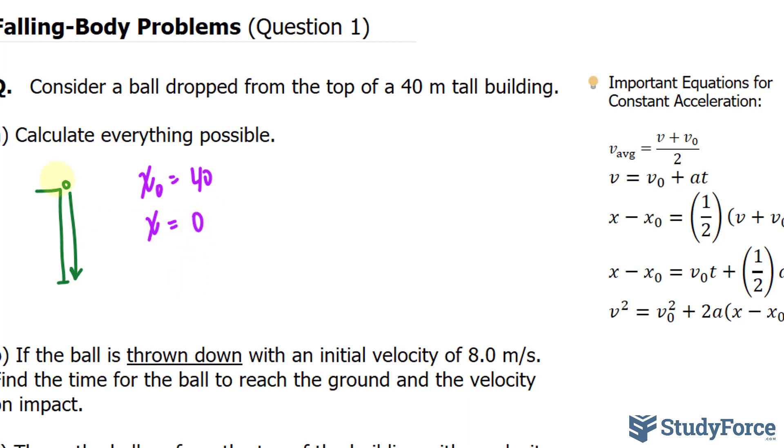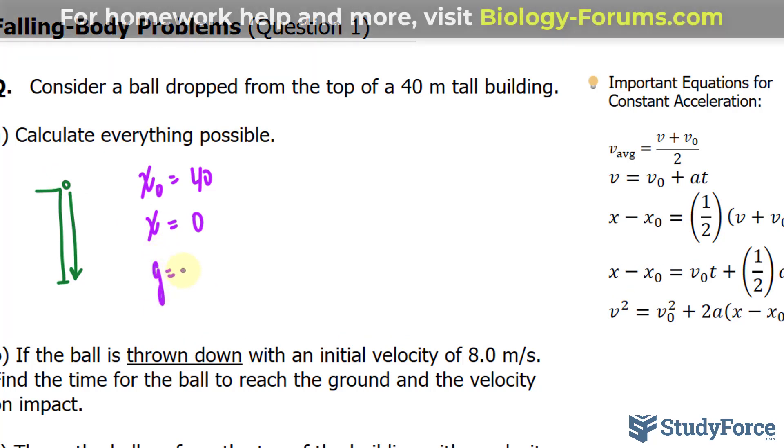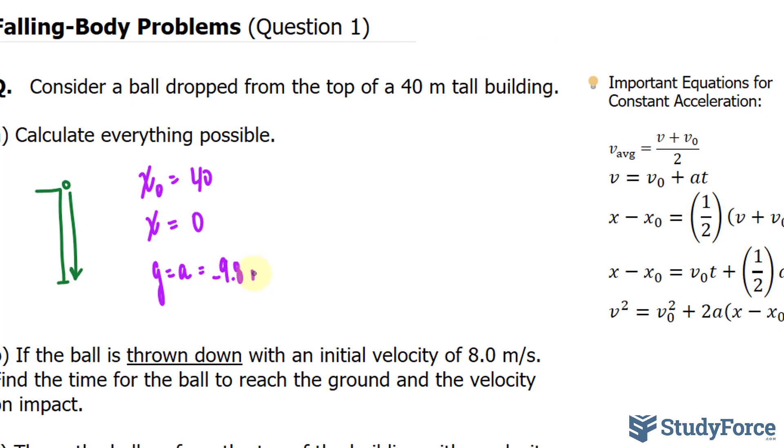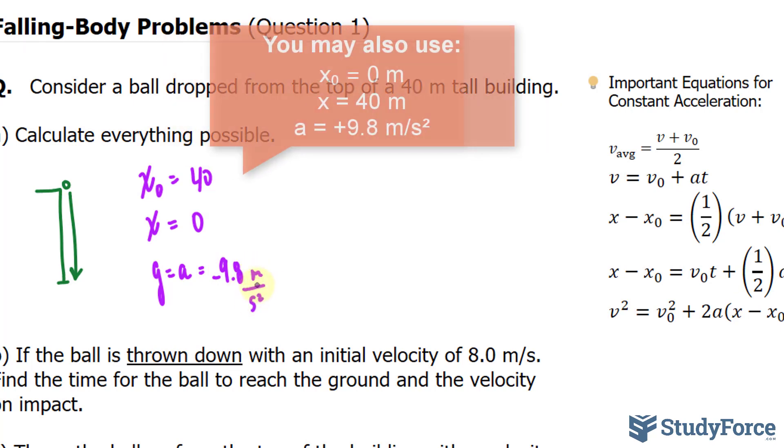There is gravity pulling this ball down and that has an acceleration. You can call it g or a, it doesn't really matter. It has an acceleration of 9.8 and don't forget that it's being dropped so it's negative 9.8 meters per second squared.